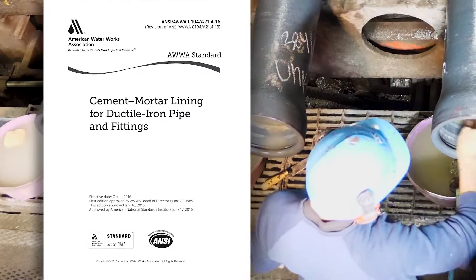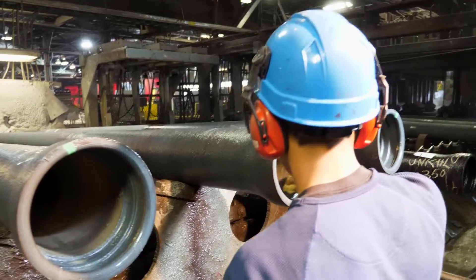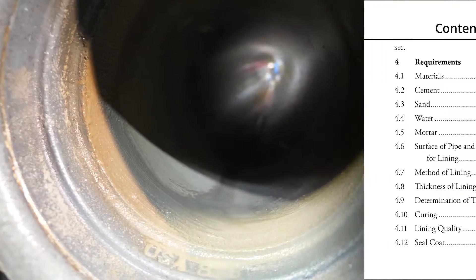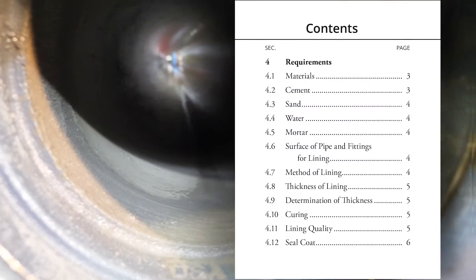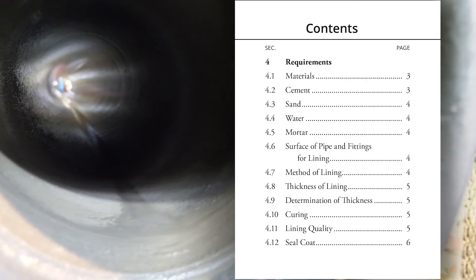AWWA C104 focuses on the interior lining of ductile iron pipe with cement to prevent tuberculation. Modern linings have largely eliminated the issue of tuberculation, but the standard also provides pipe owners and installers valuable information about the pipe they're using, including features and specs for cement type, method of lining, thickness, lining quality, and seal coat.